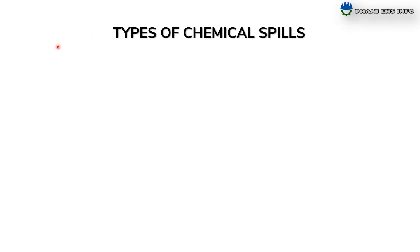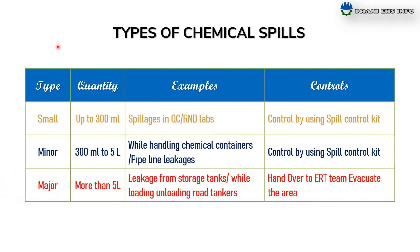Types of chemical spillages. There are 3 types of chemical spills: small, minor, and major. Small spills means up to 300 ml. Examples include spillages in QC and R&D labs. It is controlled by using the spill control kit.